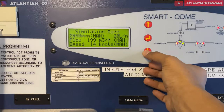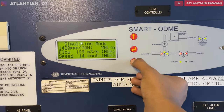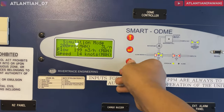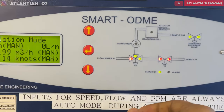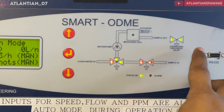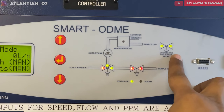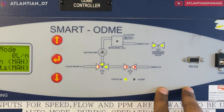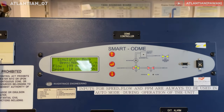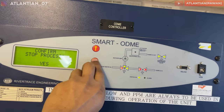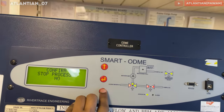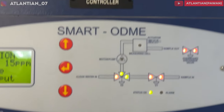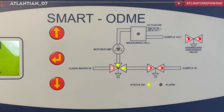Now I'll bring the value back down. Once it is below 30 liters per nautical mile, you can see the overboard valve is open again. I'll bring it back to zero — the overboard discharge valve is still open. This is what we have to check: whether our overboard discharge valve is closing and opening at the right intervals when we enter the correct values. Once done with the test, I'll click close — and the overboard discharge valve is now closed. That's the simulation test.